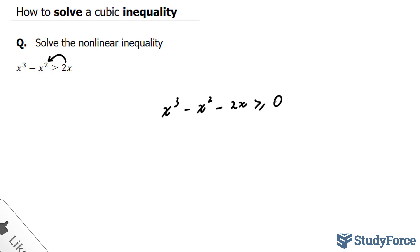To do this, we need to find the critical points. But notice that all three terms share a common factor, x. So I can factor out an x before I start doing that. x times x to the power of 2 minus x minus 2.